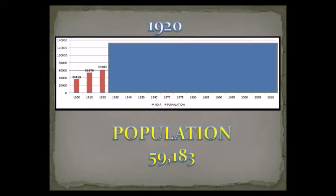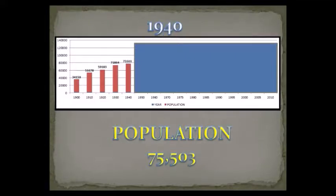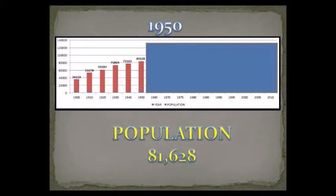Ten years later, 59,183 in 1920. Think of the history books and what was going on in 1930 — yet Springfield still grew. The 1930 census said 71,864. Then on December 7, 1941, we went to war when Pearl Harbor was attacked, yet just a year before, in the 1940 census, Springfield still grew a little bit more: 75,503. Ten years later, another small increase: 81,628.